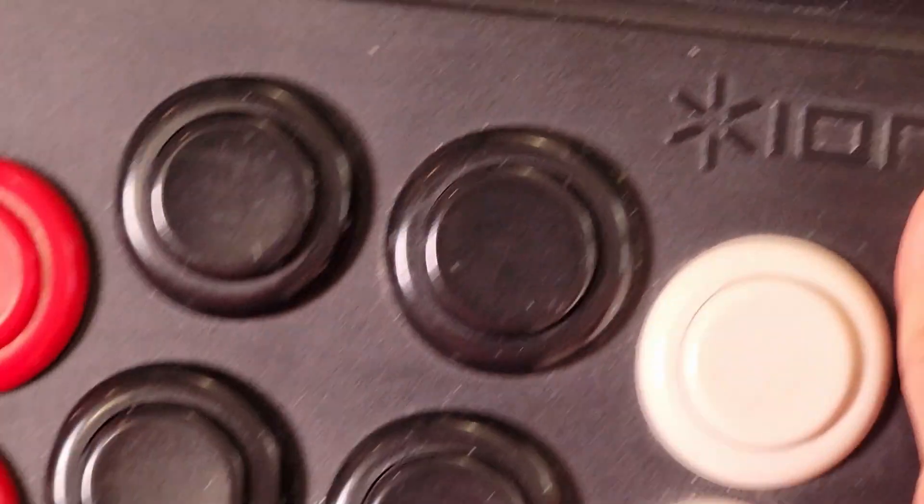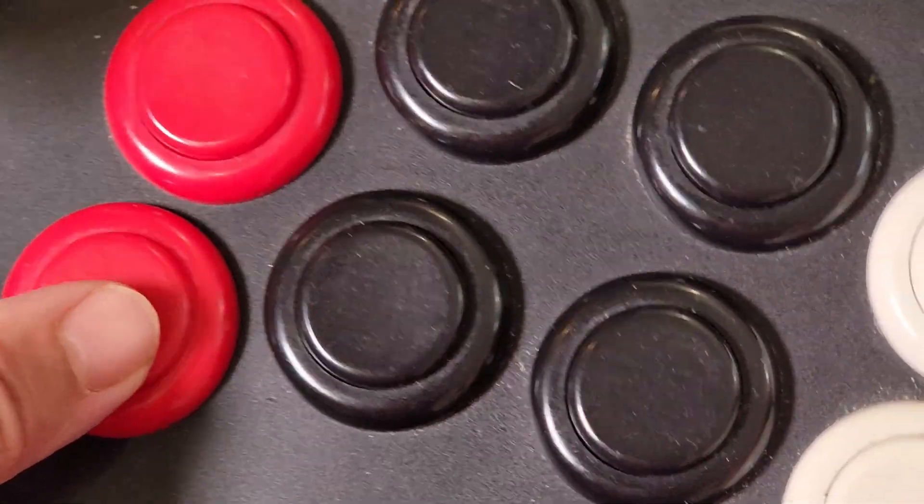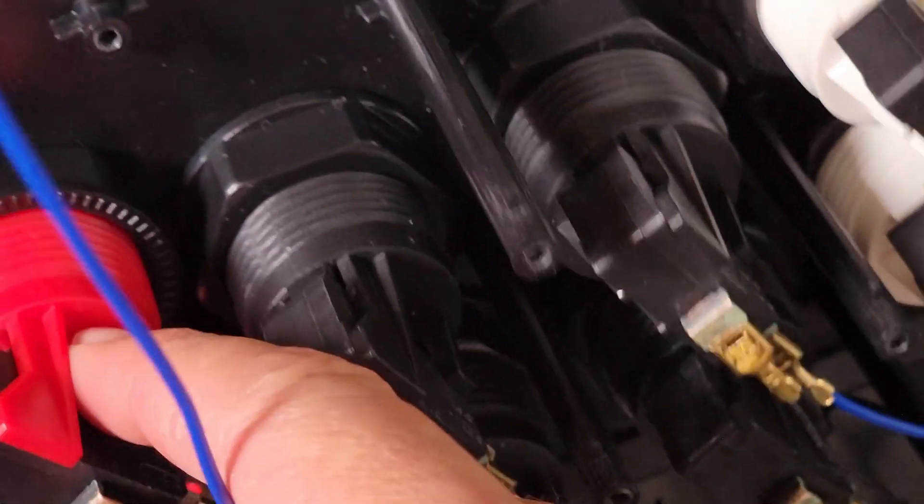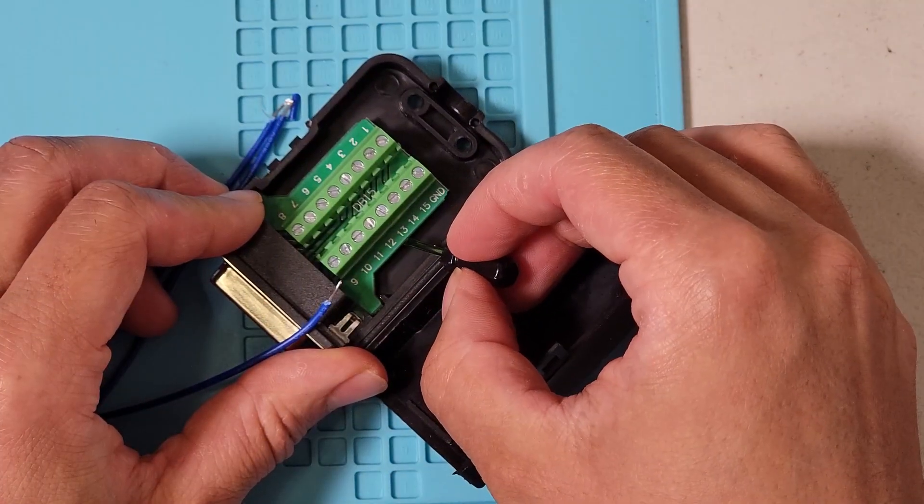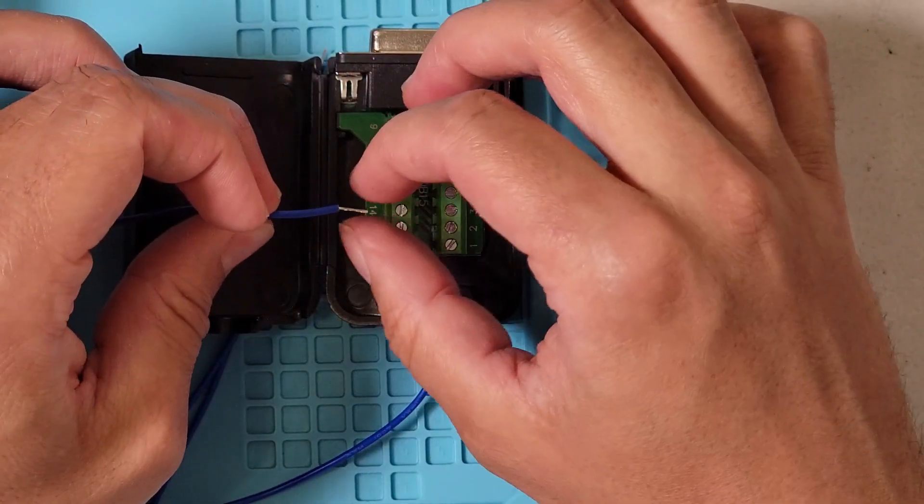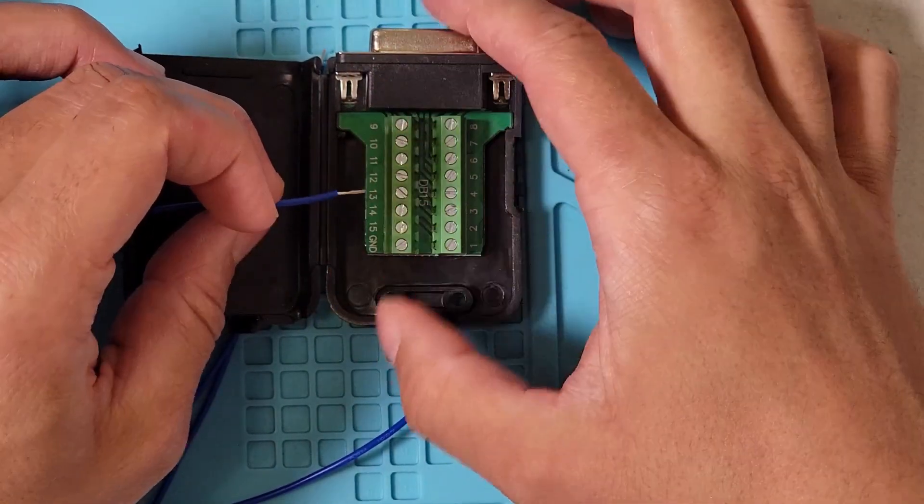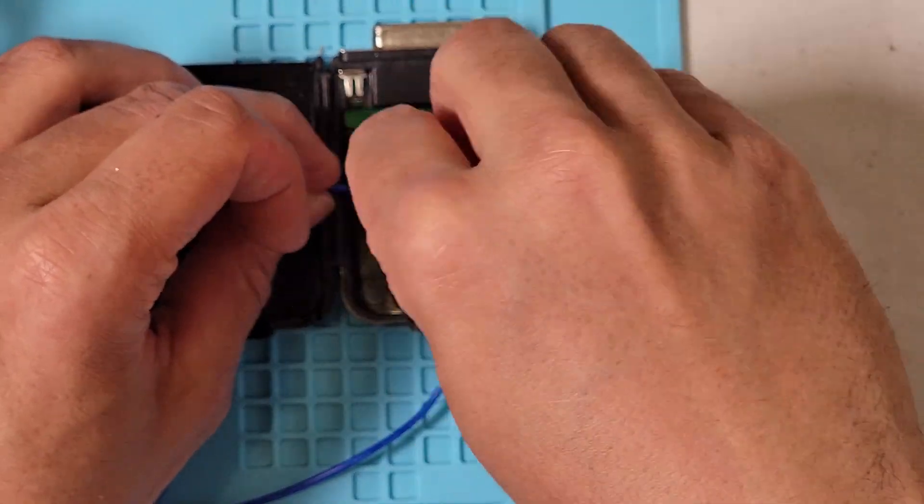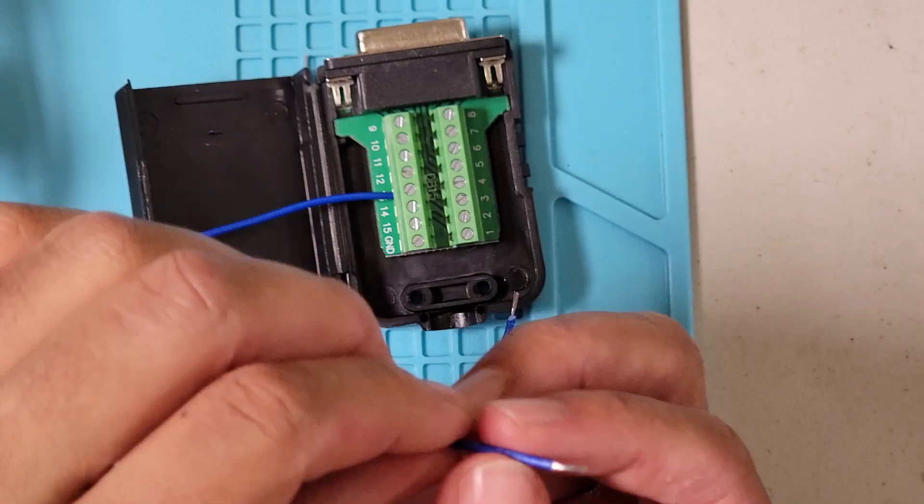On the controller, I'll use the bottom four buttons to match the A, B, C, and D buttons on the Neo Geo. So according to the chart, button A, which is also button 1, is pin 13. So I'll get the wire for button A and insert the end of it to pin 13 on the DB15 adapter. And I'll keep doing the same to all the other buttons and directions. I'm done.